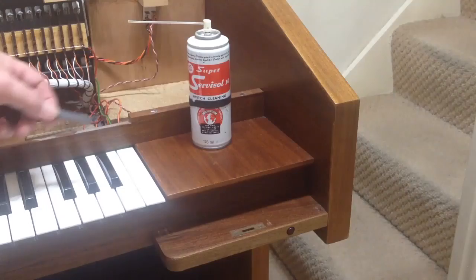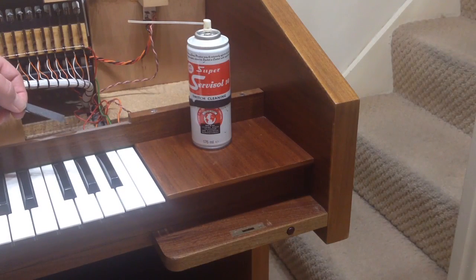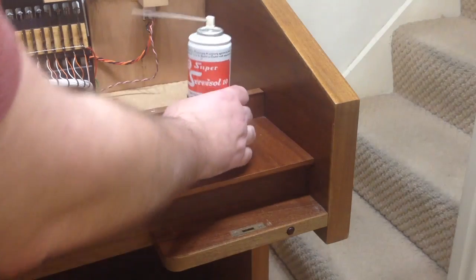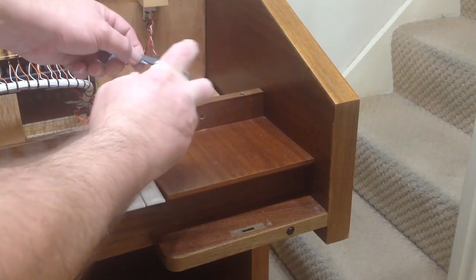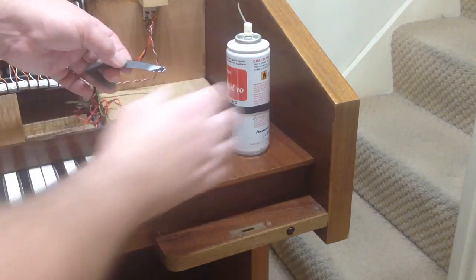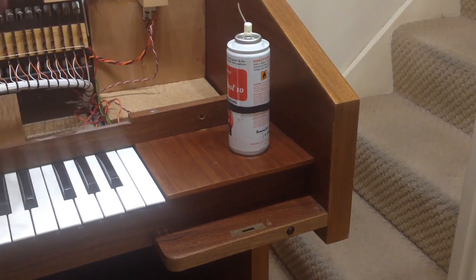And we also have some Super Service old switch cleaner. To be honest, it's probably as old as the organ, but it's something I have lying around. So all we do is just spray some of that onto the paper, and then we pop that into the keys, and I'll show you that bit in close-up.